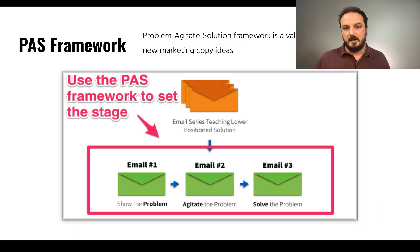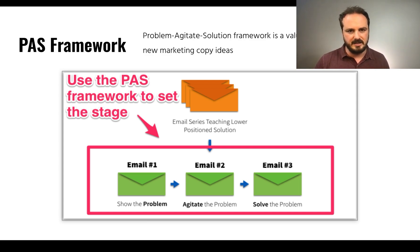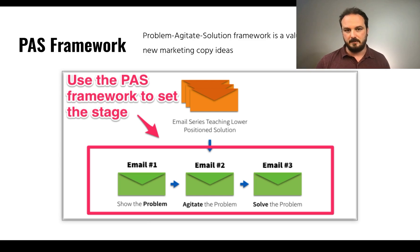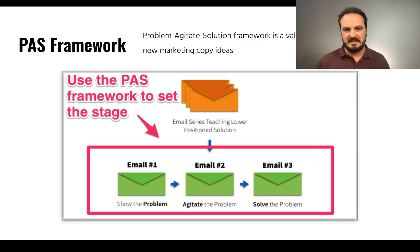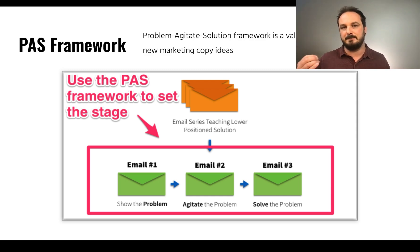How does this apply to email marketing? Using that same methodology, the first email somebody gets when they subscribe could show the problem right away. Email two agitates the problem — maybe sent one day, three days, or a week later. The third email is how you uniquely solve the problem. So it's the same problem, agitate, solution. The goal is that all of this is automated, it speaks exactly to their pain point, and it positions you on how you can uniquely solve their problem.